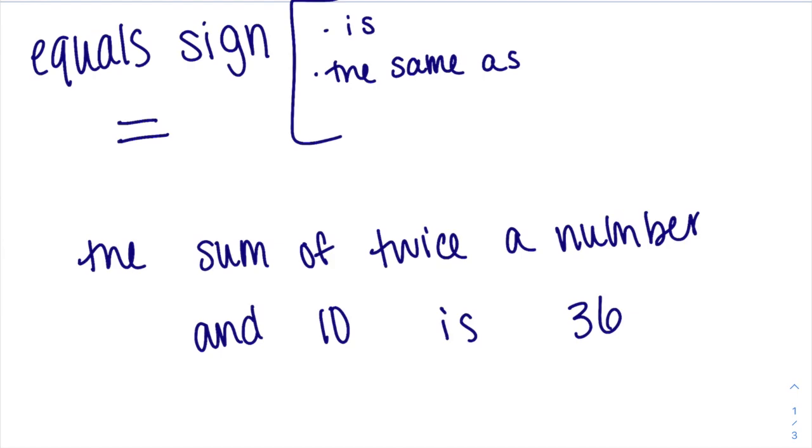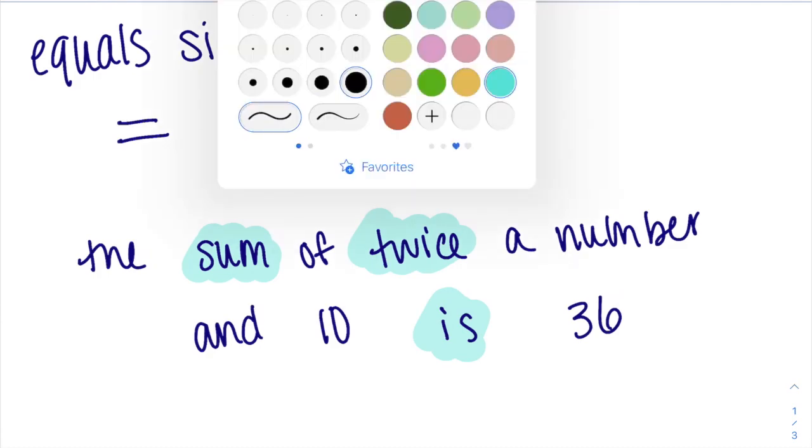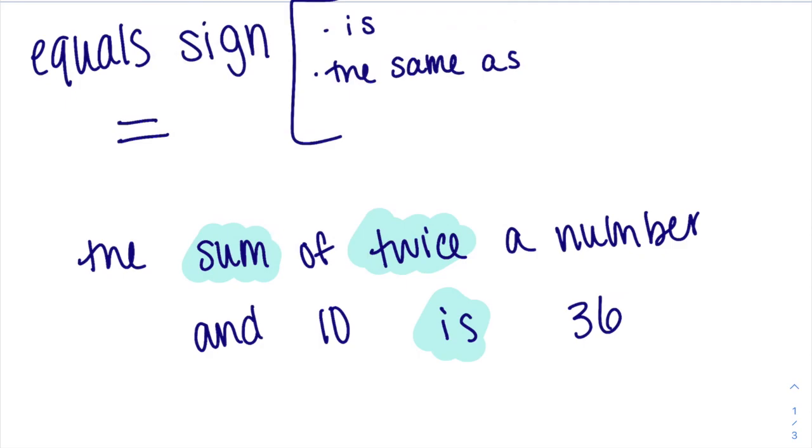The first thing I see is sum, this twice, and is. Those are all having to do with operations. The next thing I'm going to highlight is wherever I see numbers or them referring to a variable.